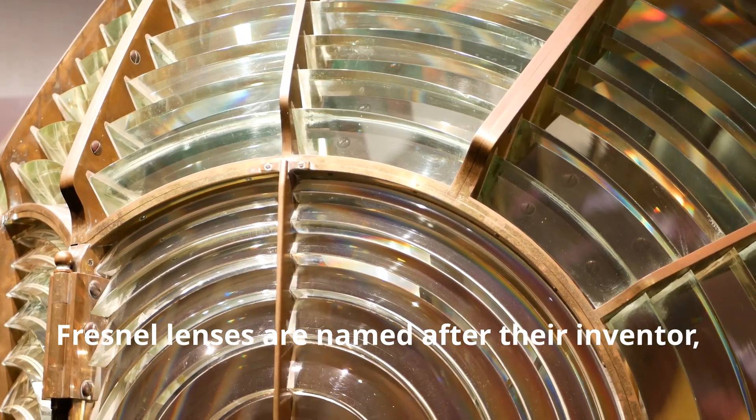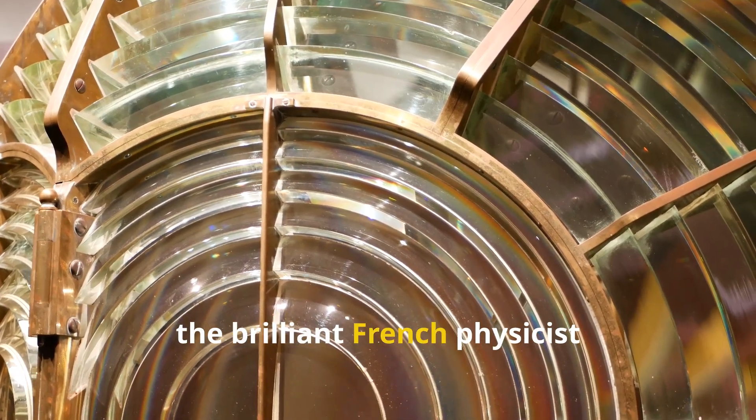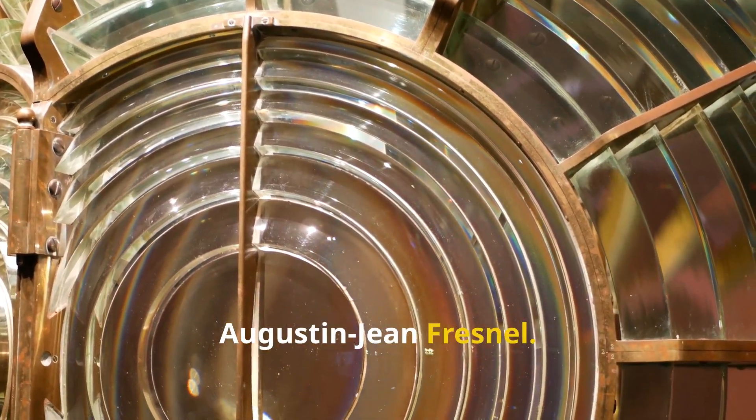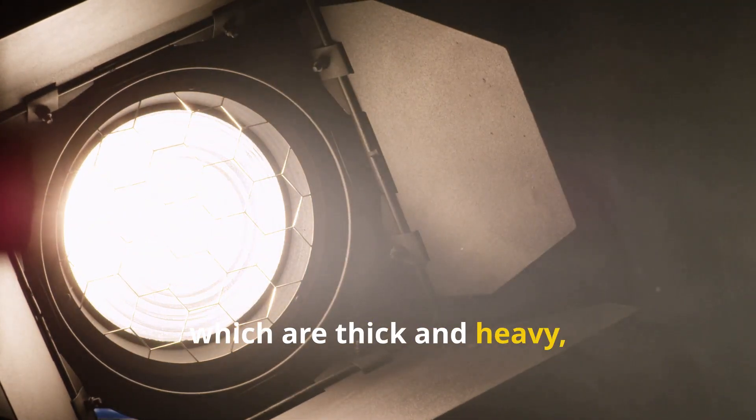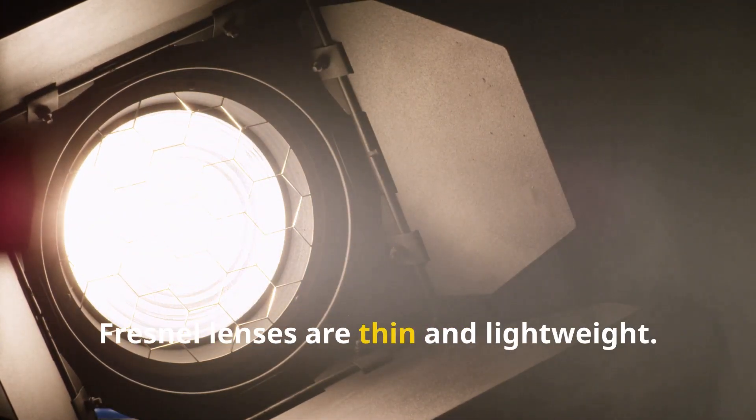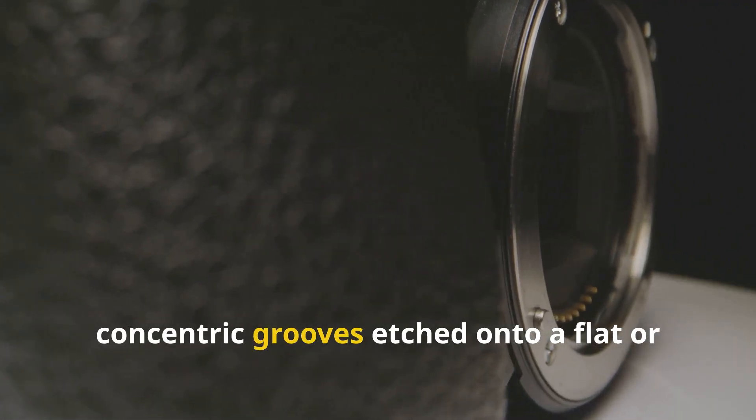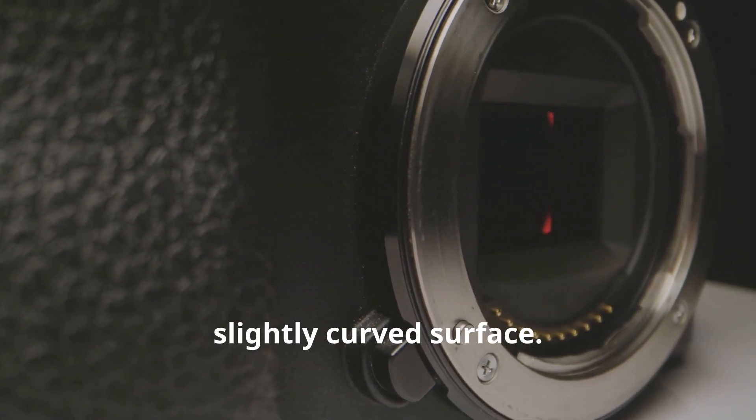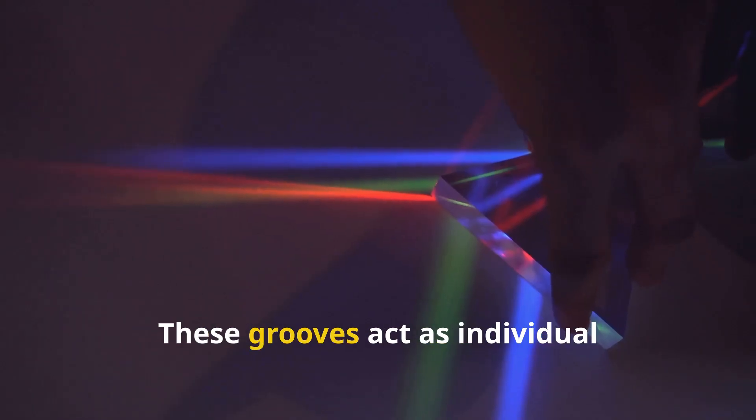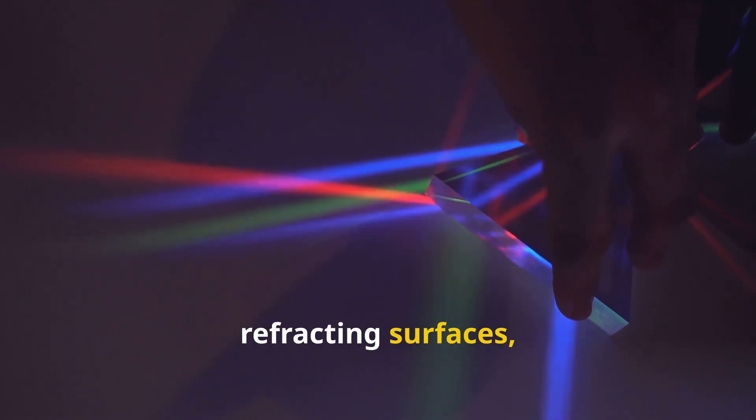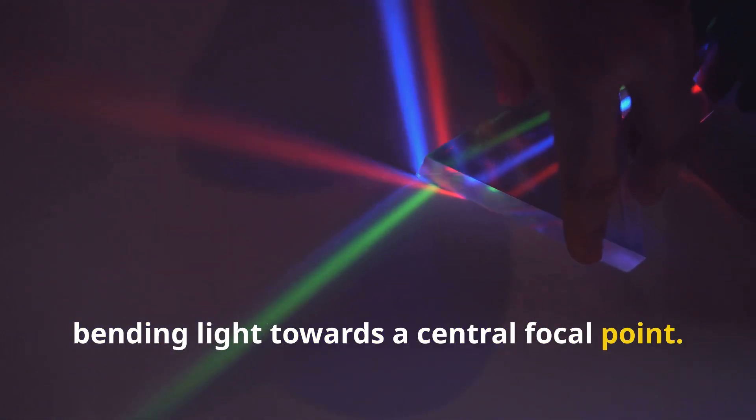Fresnel lenses are named after their inventor, the brilliant French physicist Augustin Jean Fresnel. Unlike traditional lenses, which are thick and heavy, Fresnel lenses are thin and lightweight. They achieve this by using a series of concentric grooves etched onto a flat or slightly curved surface. These grooves act as individual refracting surfaces, bending light towards a central focal point.